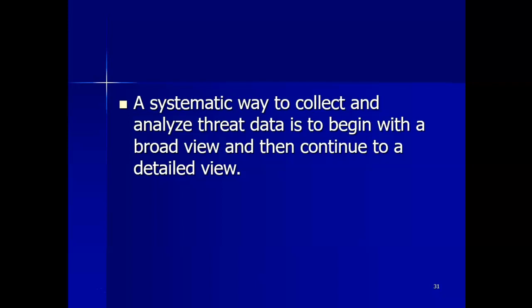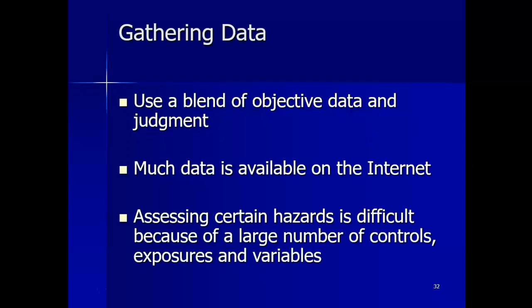You start off with the region, break it down to the community, and down to the building. Threats can be identified in the general region such as hurricane, or in the community such as a power outage, and in the building such as a fire. For natural threats, gathering data with sufficient detail and accuracy can usually be accomplished by research on the internet. General information for weather and seismic threats is usually easily obtained — just put it in a Google search and see what comes up.